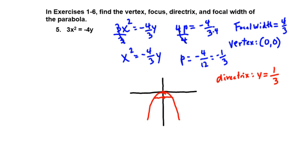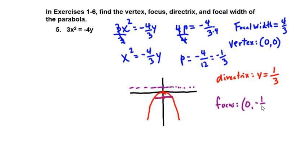The coordinate pair value of our focus is the point (0, negative 1 third). Even though the distance from the vertex to the focus cannot be negative, the value of the focus can be negative in the context of a coordinate pair. So we have a downward-opening parabola with vertex at the origin, focus at (0, negative 1/3), focal width 4/3, and directrix Y equals 1/3.